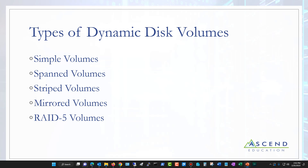Striped volumes require all drives to be the same size — unlike spanned, which can use different size drives. Striped volumes stripe data across all volumes: if you have a one-gigabyte file, it puts a little bit of that file on each volume, making it accessible much more quickly. A spanned volume puts all data on one drive until it's full, then moves to the next, and so on. To you it looks like one big volume, but it's actually using multiple disks.